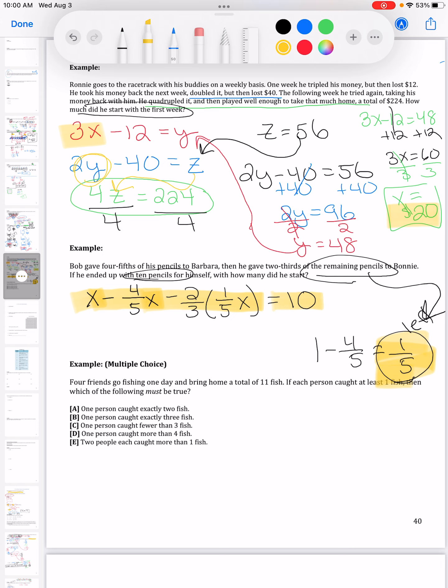So kind of reading across, he started with pencils, he gave away four-fifths. If he gave away four-fifths, all he had left was one-fifth of his pencils. One minus four-fifths is one-fifth. He gave away two-thirds of what he was left with and that left him with ten.